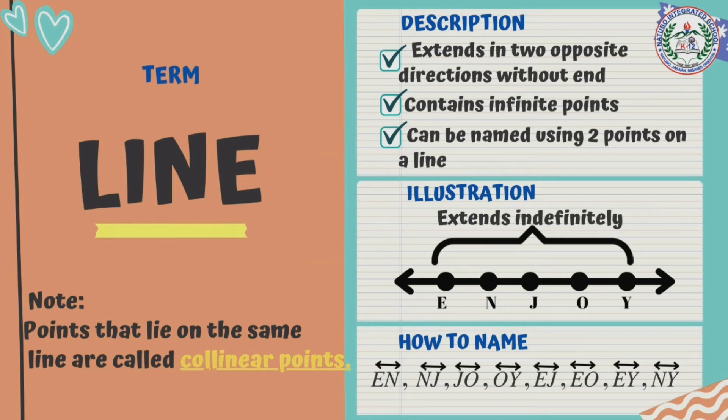We have the line symbol at the top of the letters. We have line EN, line NJ, line JO, line OY, line EJ, line EO, line EY, and line NY. And note that points that lie in the same line are called collinear points. So therefore, the points E, N, J, O, and Y are collinear points because they lie on the same line.